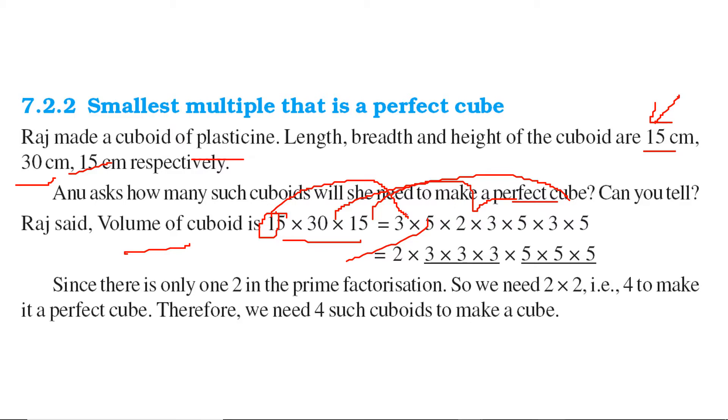Let us combine them in triplets. So we have a 3 here, we have a 3 here, we have a 3 here. Now we have a 2 here and we don't have any combination of 2. We have 5 here, 5 here and 5 here. So 5 into 5 into 5, 3 into 3 into 3, but we have only one 2.